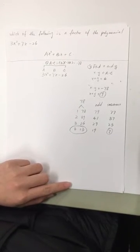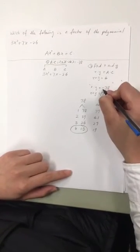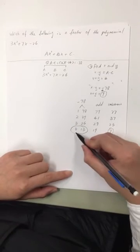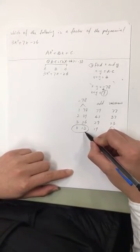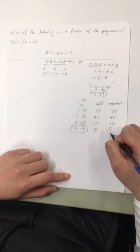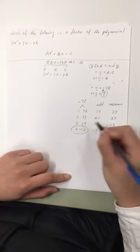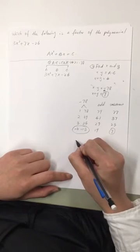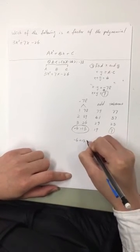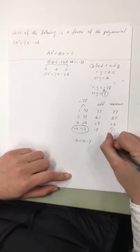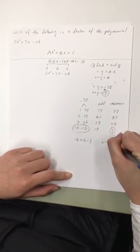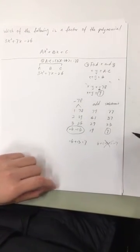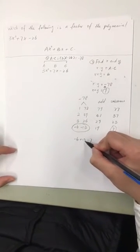Because the product of a and c is a negative number, the sign of these two numbers should be different. Because b is 7, the big number 13 should be positive, and the 6 should be negative. So negative 6 plus 13 is 7. Otherwise, if you do 6 plus negative 13, we'll get negative 7. It's not what we want. So we need to choose negative 6 and 13.